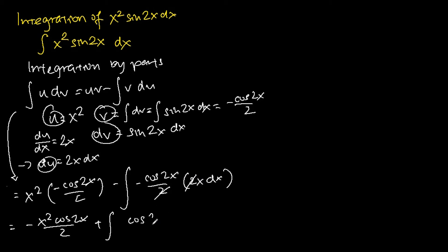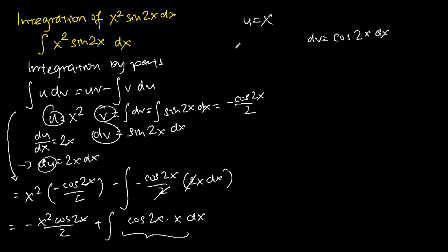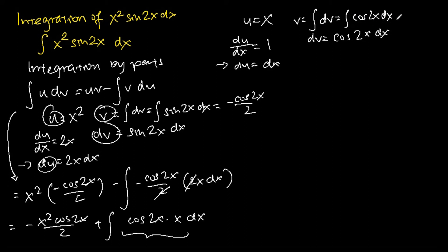To evaluate this remaining integral we use integration by parts again, letting u equal x and dv equal cosine 2x dx. To find du we differentiate u: the derivative of x is 1, so du = dx. To find v we integrate dv, giving the integral of cosine 2x dx which equals sine 2x over 2.